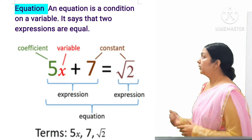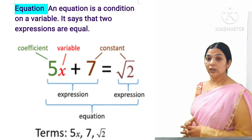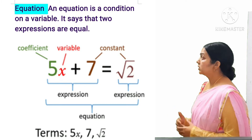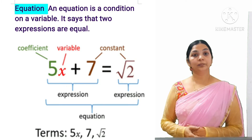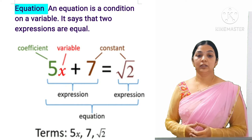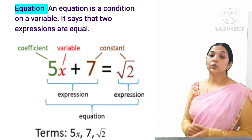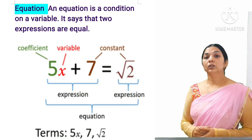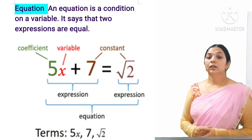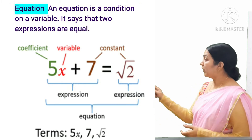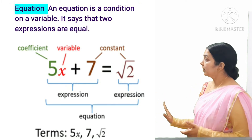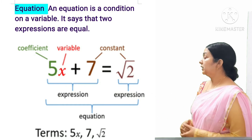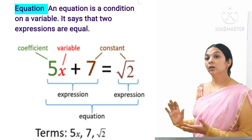Here, x is the variable; 5, 7, and √2 are constants; and plus is the operation. So 5 is the coefficient, x is the variable, and 7 and √2 are constants. The expression 5x + 7 is known as an algebraic expression. When we add the equality sign, it becomes an equation.